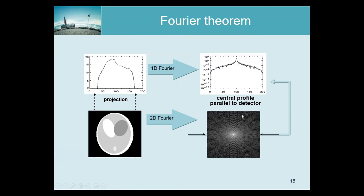If you compute an image like this and show it on your screen, all you see is a white dot in the center. I raised it to the power 0.2 or 0.3 so you can see something, because these values are typically very small compared to the mean. Now we assume that the gamma camera, PET camera, or CT will compute projections, which we organize as parallel beam projections.